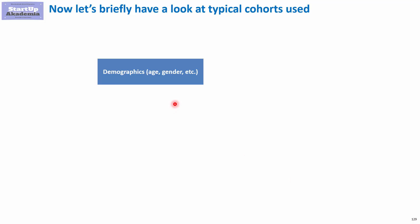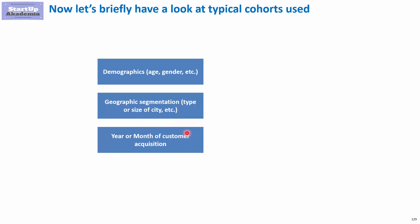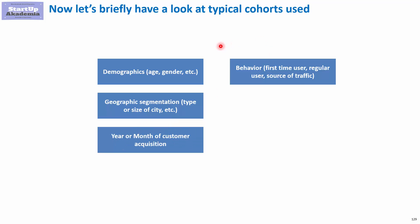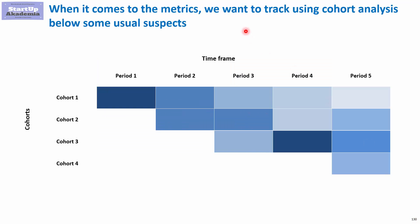Now let's briefly look at typical cohorts used. It can be a segment defined using demographics. It can also be a segmentation based on geographic characteristics like size of the city, density of the population, or being located in a specific country. We can look at the year or month of customer acquisition, behavior such as whether it's a first-time user, where he comes from, how often he buys, how much he spends. Finally, we can use psychographic segmentation, however this requires more information that would have to be gathered in some other way, because observing the customer alone would make it very difficult to figure out.